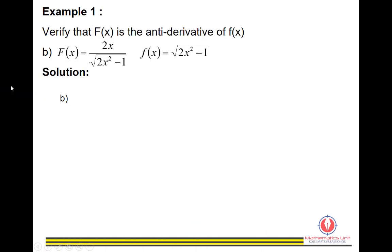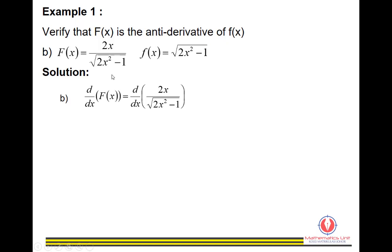Part B: Given F(x) = 2x / √(2x² − 1) and f(x) = √(2x² − 1). To verify that F(x) is the anti-derivative of f(x), the first step is to differentiate F(x) = 2x / √(2x² − 1) using the quotient rule.